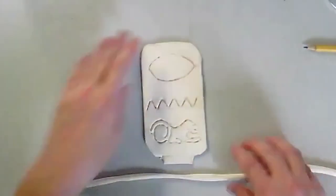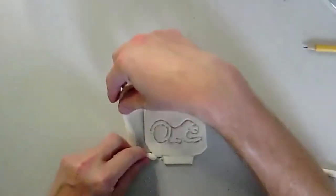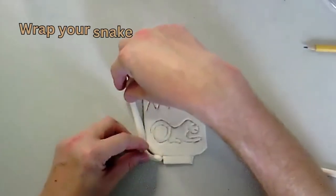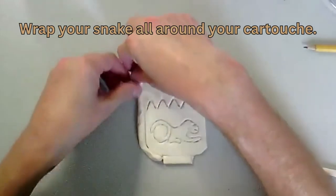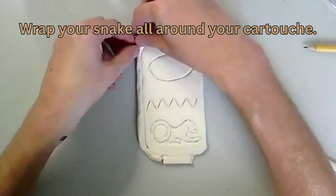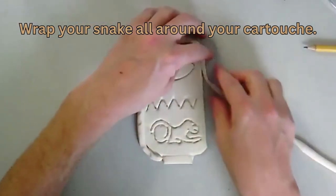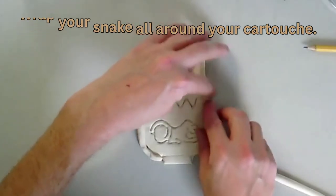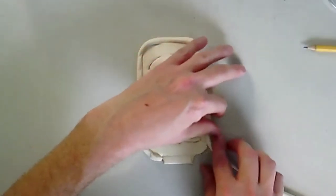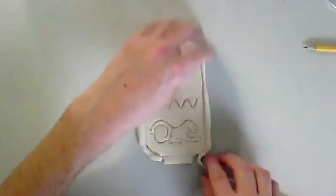I'm going to take my cartouche here and I'm going to wrap my clay snake around the edge. This is just going to give it a cool decorative look to it. I think it's going to have a little lip. It'll look really cool. The cool thing about this air-drying modeling clay is it's very sticky.